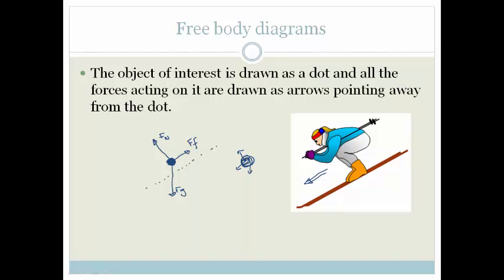Your dot has to be big enough so that all the forces can be coming off of it at 90 degrees to the dot. And that is the difference between force diagrams and free body diagrams.